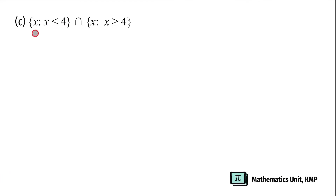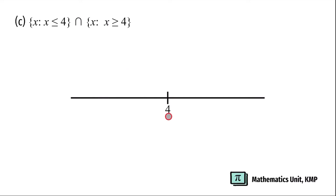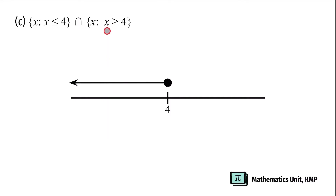Next: x such that x is less than or equal to 4, intersect with x is greater than or equal to 4. On top of 4, we're going to use a closed circle on both, since both have an equal sign — less than or equal to 4 and greater than or equal to 4. For x less than or equal to 4, we represent it with a left side arrow, and for x greater than or equal to 4, a right side arrow.